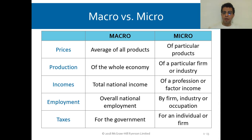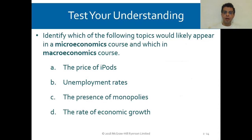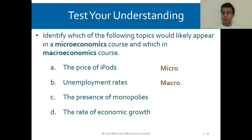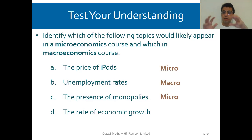Let's test our understanding. Identify which topics belong to micro or macro economics. The price of iPods is micro, because we're talking about a specific product. The unemployment rate is macro, because we're talking about the whole country. The presence of monopolies is micro, because it's a certain part — not the whole country. The rate of economic growth is macro. You need to evaluate them and see which level each belongs to.